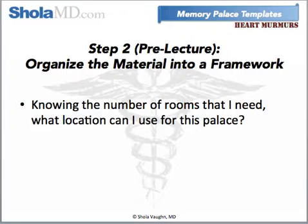Then we move to step two, which is to organize the material into a framework. There are a few different ways to organize material into a framework, but my favorite is the memory palace. Ask yourself, knowing the number of rooms that I need, what location can I use for this palace? For me, with murmurs, I used an office building that I worked in right after college. It had two major groups of offices with a bridging area and the right number of subspaces for each murmur.